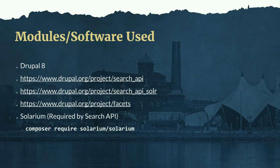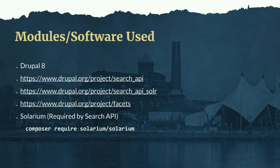The modules and software we'll use are Drupal 8, obviously, and the Search API module, which is a search framework available for Drupal — it's a contrib module. Many of you are probably already familiar with that. Search API Solr allows Search API to use Apache Solr as the search backend. We'll also be using the Facets module, which allows you to build filters as blocks to drill down into search results. When setting up Search API Solr, you may be required to add the Solarium library to your Drupal build.